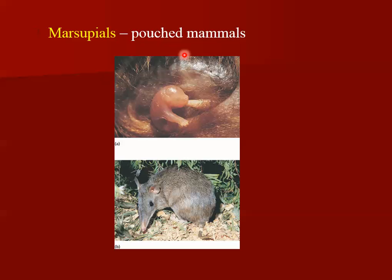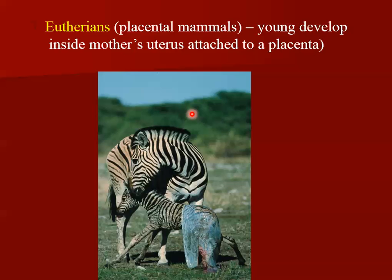Marsupials are another order of mammals — the pouched mammals. A baby kangaroo is born in embryonic form and has to crawl about a foot to the top of its mother's pouch to find the nipple and drink milk. The most successful mammals are what your book calls eutherians, which most of us call placental mammals. Your book doesn't like that term because marsupials have a tiny, temporary placenta too. The young develop inside the mother's uterus attached to a placenta, developing past the embryonic stage so they look like a mini-adult when born.